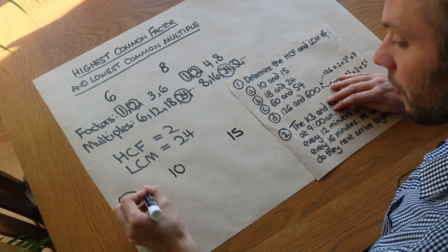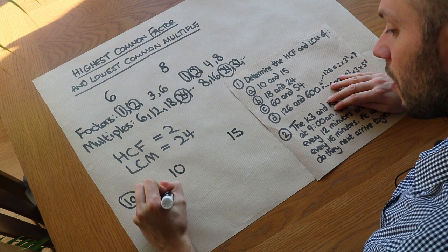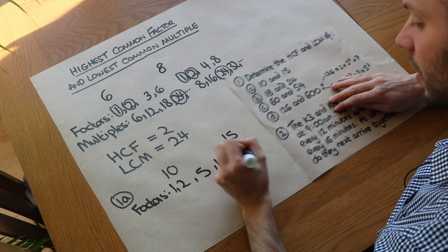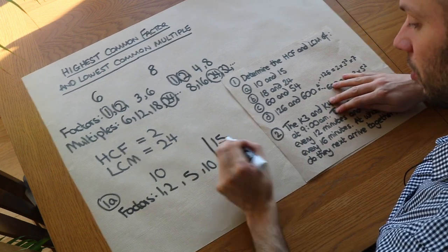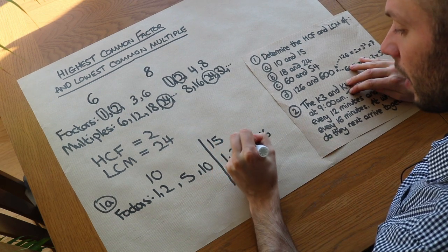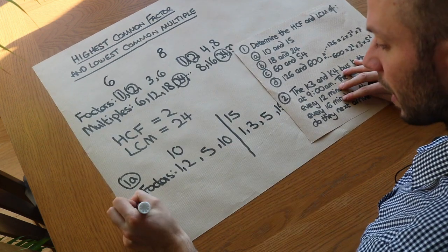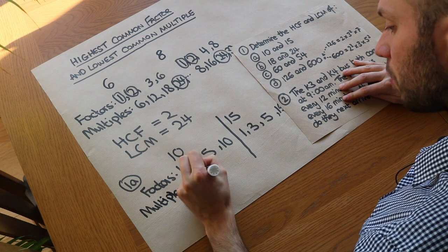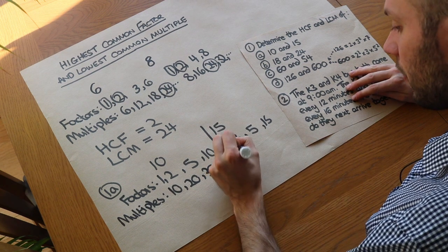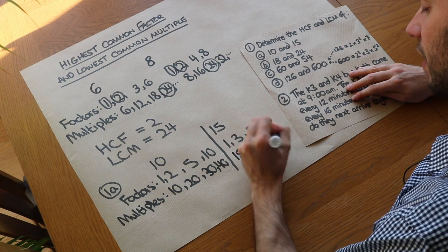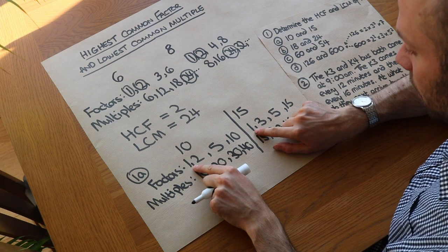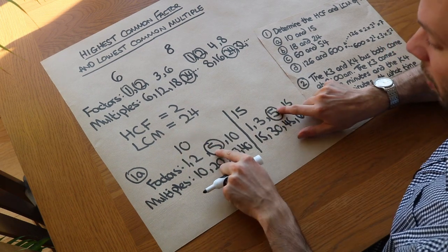If we have 10 and 15, the factors of 10 are: 1 and 10, and 2 times 5 — there are no other factors. The factors of 15 are: 1 times 15 and 3 times 5 — no other factors. For multiples we've got 10, 20, 30, 40, etc. — basically the 10 times table. With 15 we've got 15, 30, 45, 60, etc. What factors do they have in common? Well, they have 1 in common for sure, but they also have 5 in common, and that is the highest common factor.